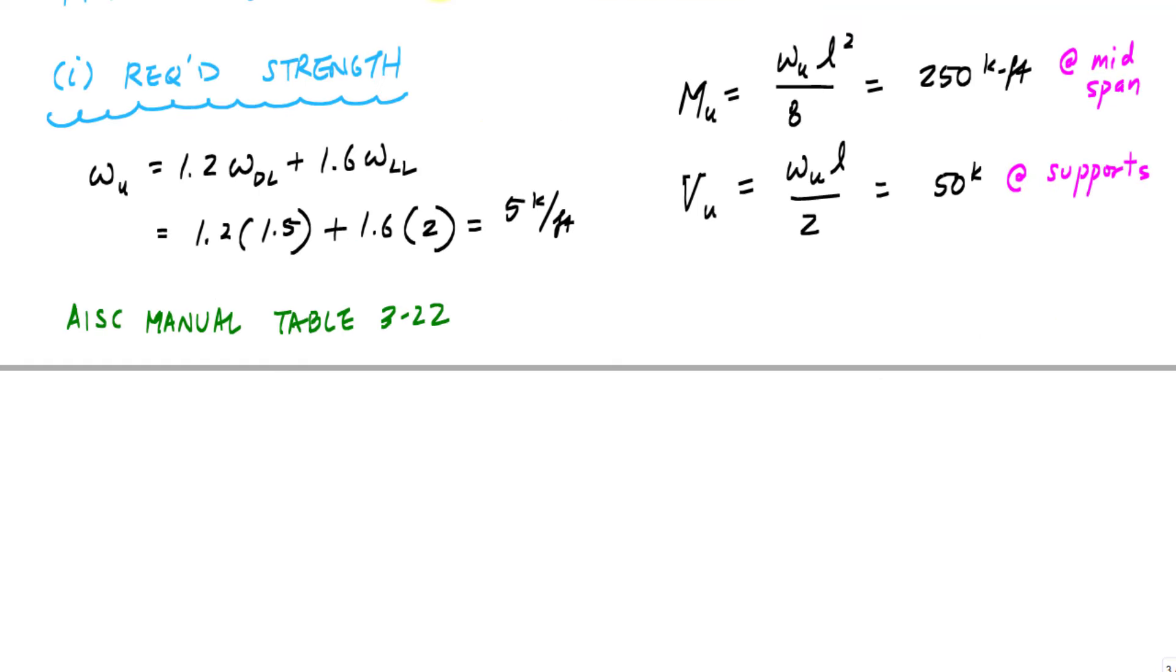Once I know that, then I'm going to determine my unbraced length. In this case, because I have continuous lateral support, my unbraced length is zero. That means the only limit state I have to worry about is yielding.